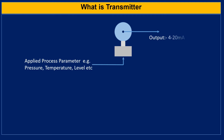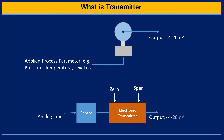A process transmitter is a device that sends the process parameter and converts it into a standard instrumentation signal. This signal is proportional to the value of the variable being measured. A transmitter often combines a sensor and a transmitter unit. The sensor sends the process variable and the transmitter converts it to a standard signal like 4 to 20 mA, 1 to 10 V, or 3 to 15 PSI.